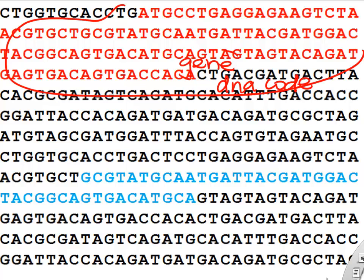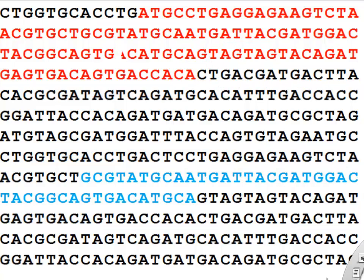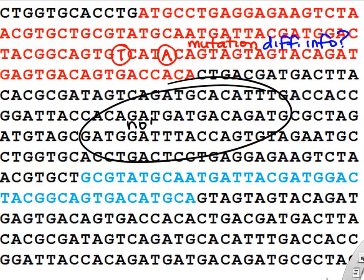Looking at this big mass of information, one set of nucleotide sequences will be a gene for one protein, and another set of nucleotides will be the information for another protein — a different gene. That's what people mean by a gene: just a sequence of nucleotides. And if some of those nucleotides change, we might call that a mutation, which might lead to building a different protein because you've changed the information.